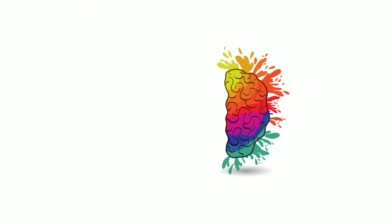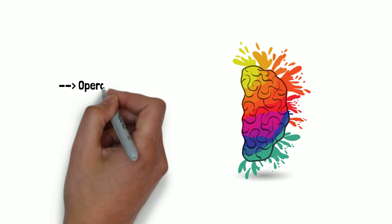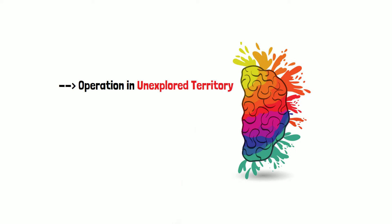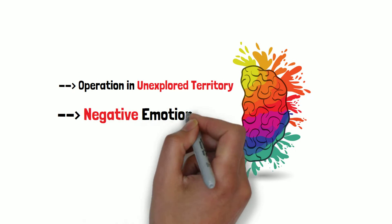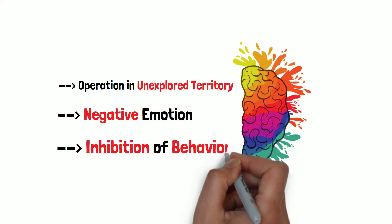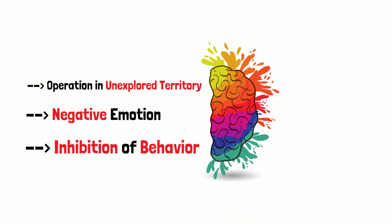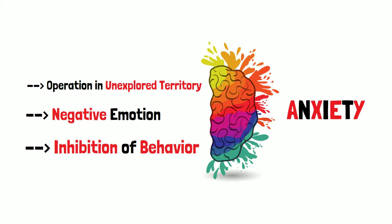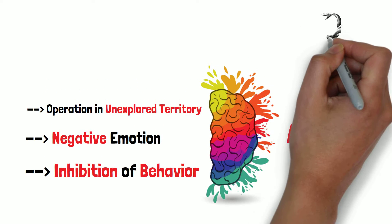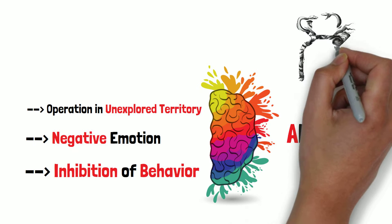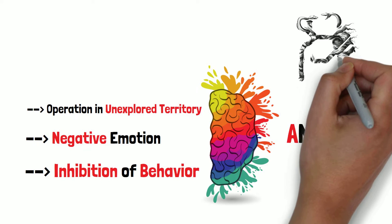Right hemisphere. Operation in unexplored territory. Negative emotion, inhibition of behavior. That's anxiety. That's what happens when the Medusa looks at you — you turn to stone. That's the Basilisk in Harry Potter. It freezes you.